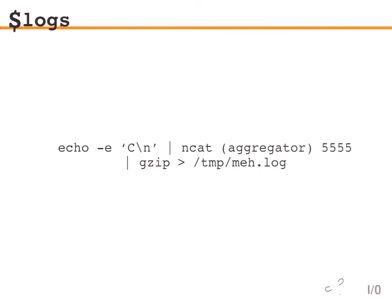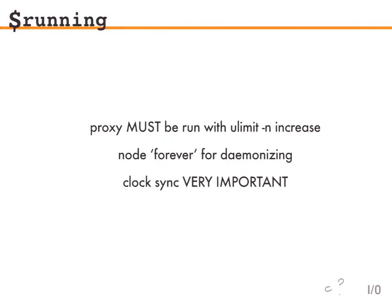On logging: this stuff is pumped through the aggregator. You can log it by connecting to the aggregator and just gzipping it into a log. Things like Logstash or Loggly let you shove JSON data in directly. Some notes on running it: you really have to run the proxy with ulimit -n increased to something large, otherwise you'll run out of file descriptors and be in the same boat as with Apache. Node forever is a decent way to daemonize it — it backgrounds and handles restarting automatically. Clock sync is really important because the proxy generates the timestamps, so if one of 300 proxies has a wrong clock, you get invalid timestamps. Use NTP.